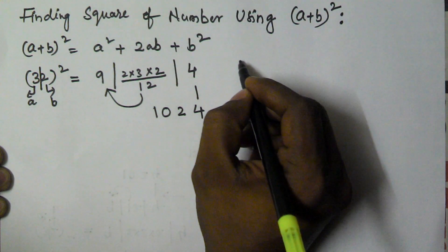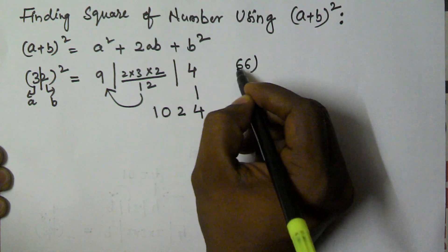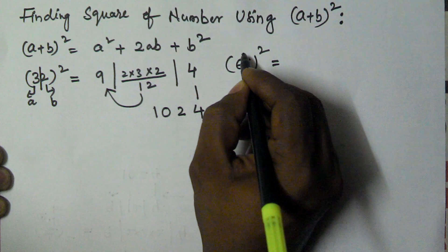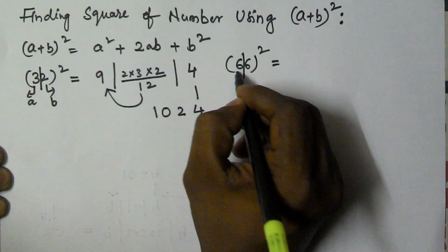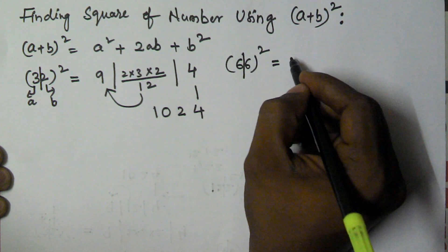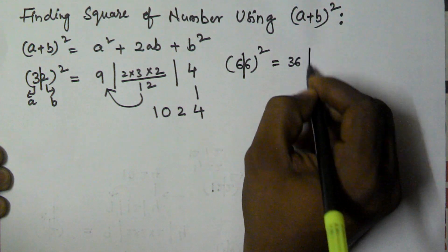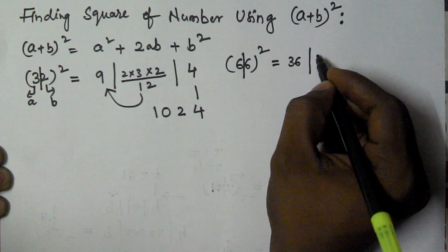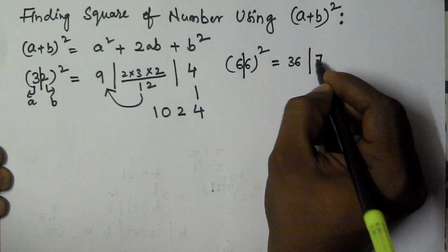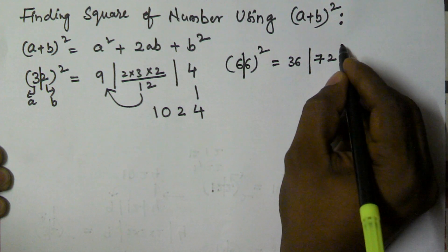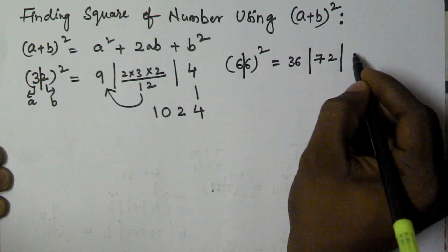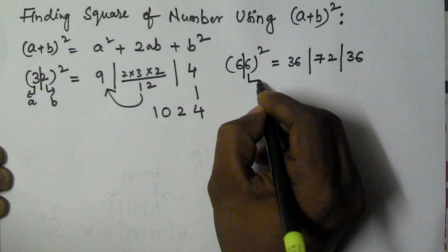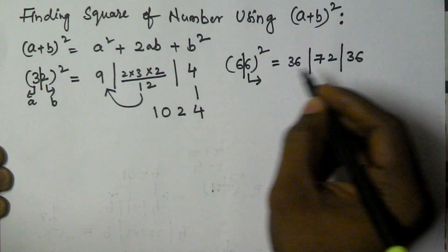Now let's consider another example: finding 66². We divide 66 into two parts, so a = 6 and b = 6. Then a² = 36, 2ab = 2 × 6 × 6 = 72, and b² = 36. The right-most part contains only one digit.